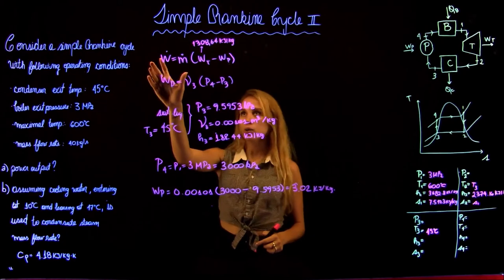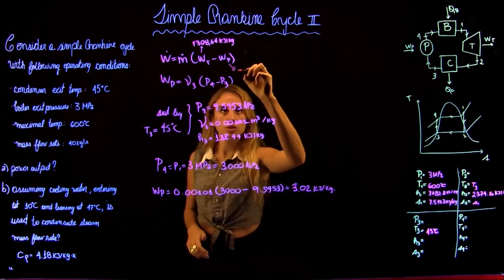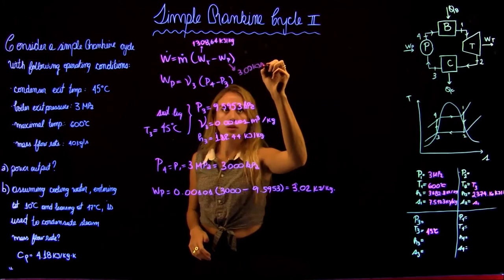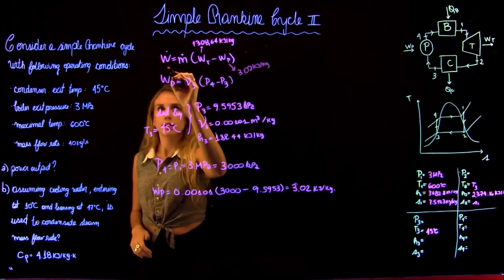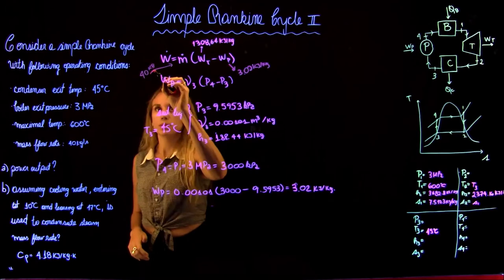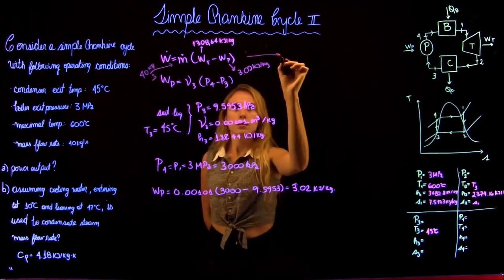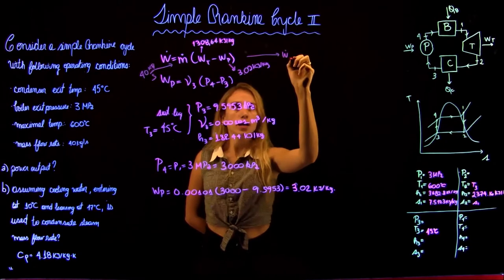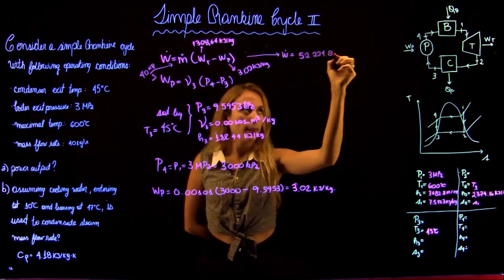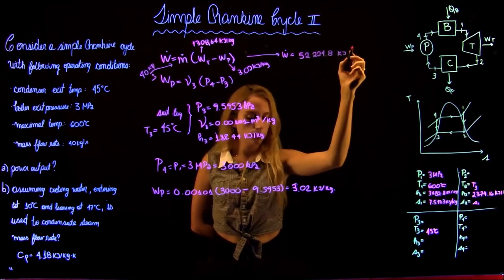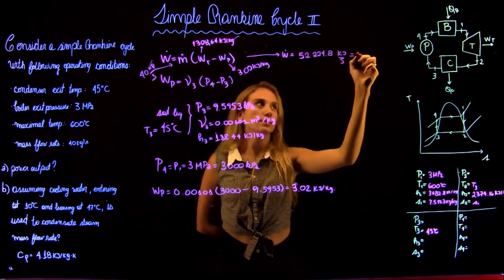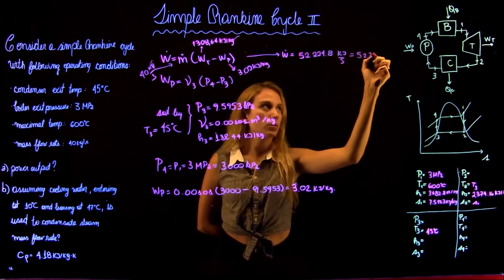Now we can go back to our power output equation and plug in the numbers. The work net is 1308.64 − 3.02 = 1305.62 kJ/kg. The mass flow rate is given as 40 kg/s, and that gives us a power output of 52,224.8 kJ/s, which equals 52.2 MW.